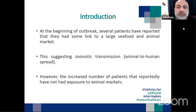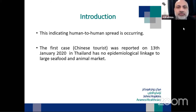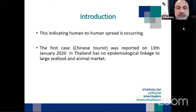At the beginning of the outbreak, several patients were linked to a large seafood and animal market, suggesting zoonotic transmission — from animal to human spread. However, the increased number of patients with reportedly no link to the animal market indicates human-to-human spreading is occurring. The first case with no link to the seafood and animal market was a Chinese tourist in Thailand on January 13.